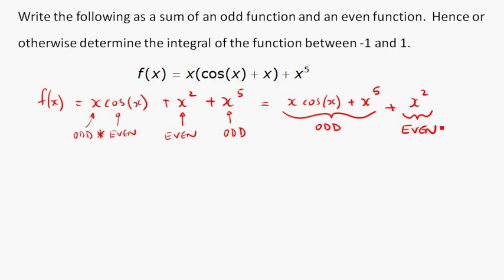So that's splitting it up into odd and even parts. Now where's the benefit of that? Well the benefit comes because the integral that we're after says find the integral of the function between minus 1 and 1. So if we find the integral between minus 1 and 1 of f x dx, we can write that as the integral between minus 1 and 1 of x cos x plus x to 5 dx plus the integral between minus 1 and 1 of x squared dx. So I've split the thing up into the integral of the odd function and the integral of the even function.